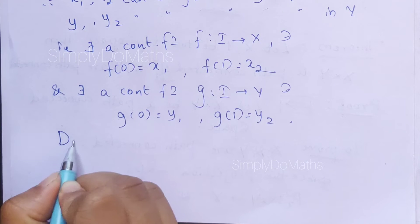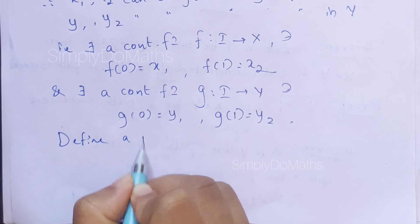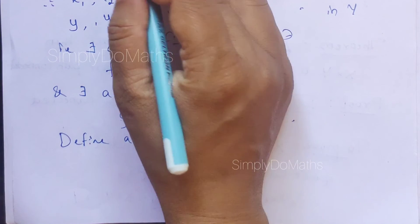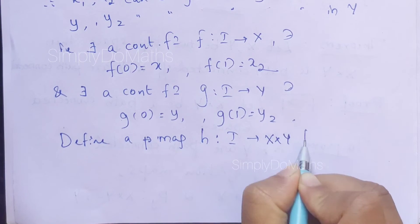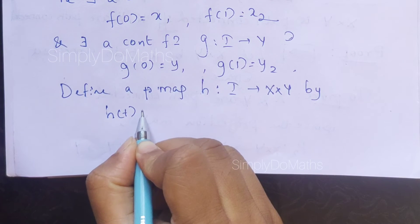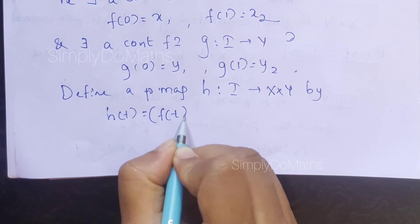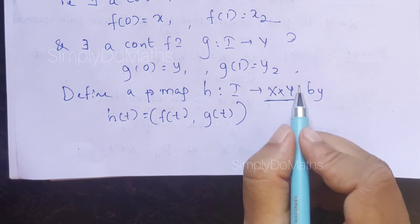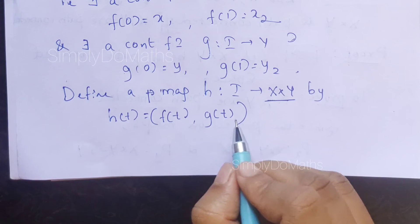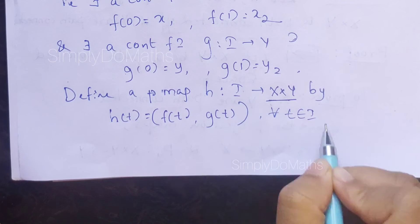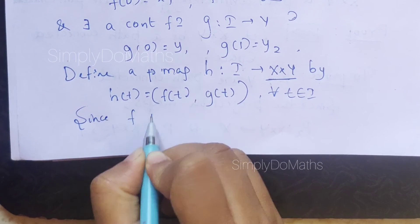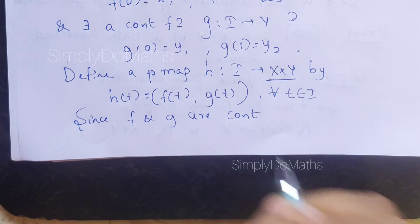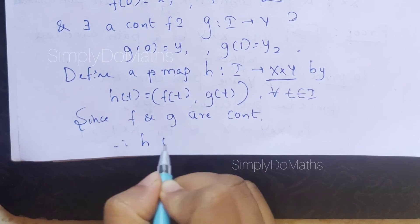Now we need to combine all these two, so I need to define another function. I am considering h from I to X×Y, defined by h(t) equals (f(t), g(t))—the ordered pair f(t), g(t)—for all t belonging to capital I. As you know, f and g are continuous, so h consists of two continuous functions in an ordered pair. That is why this h will be continuous.